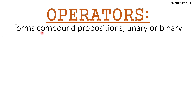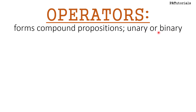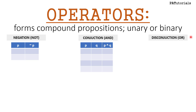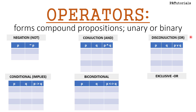Operators are logical connectives that create compound propositions. They can be unary, meaning one operand, or binary, meaning two. We have six operators: negation (not), conjunction (and), disjunction (or), conditional (implies), biconditional, and exclusive or.